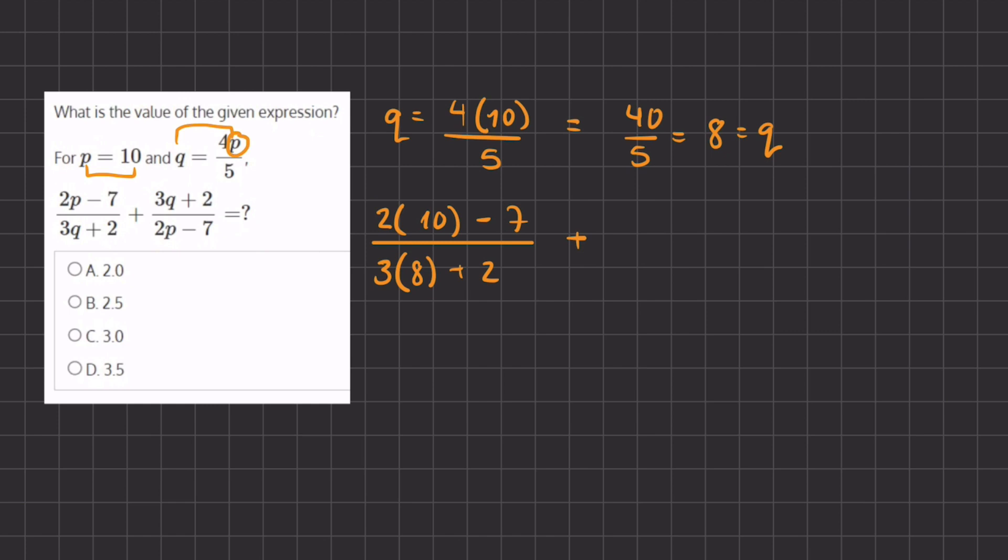And our second fraction is 3 times q, which is 8, plus 2, all this divided by 2 times p, which is 10, minus 7.